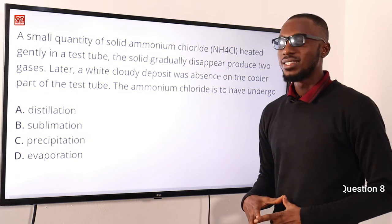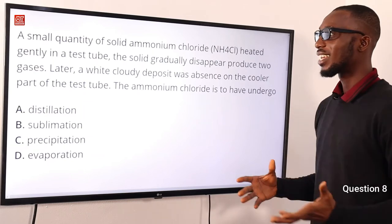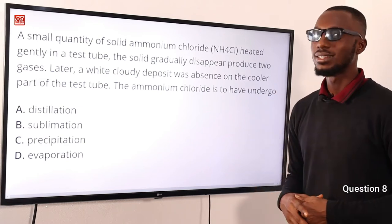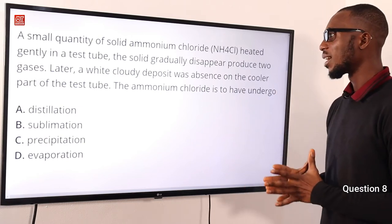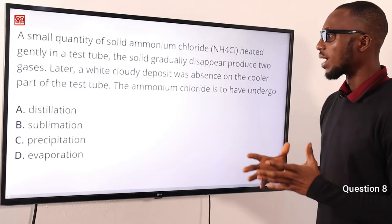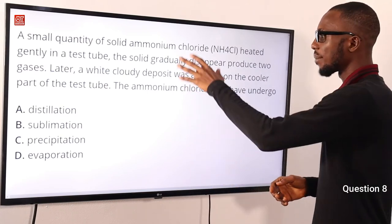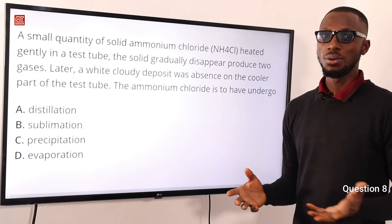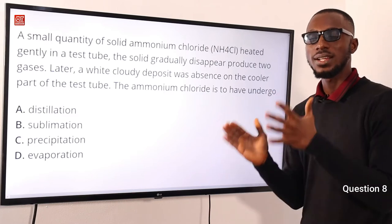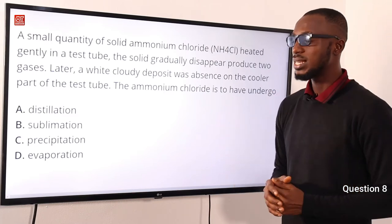Question 8. A small quantity of solid ammonium chloride heated gently in a test tube gradually disappears, producing two gases. A white cloudy deposit then appears on the cooler part of the test tube. The ammonium chloride has undergone sublimation — when a solid moves from the solid state to the gaseous state without passing through the liquid phase. Another example of such a solid is iodine.